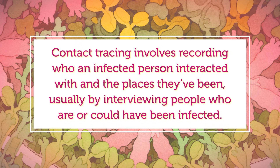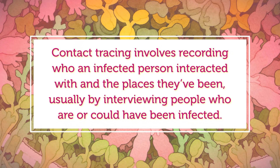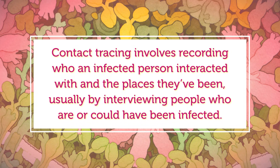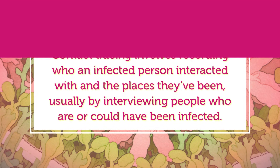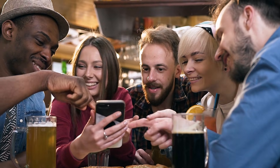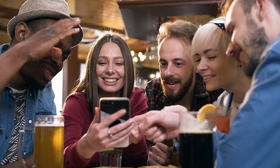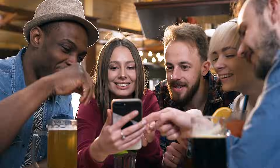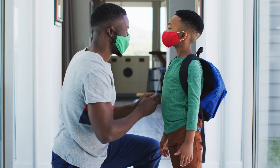One of the ways epidemiologists get data on transmission is through contact tracing. Contact tracing involves recording who an infected person interacted with and the places they've been, usually by interviewing people who are or could have been infected. During the early stages of the COVID-19 pandemic, contact tracing identified that loads of people became infected when in the same poorly ventilated indoor spaces. This is a key piece of evidence that the virus spread largely through droplets and helped epidemiologists decide to recommend wearing masks as an intervention. Recommendations like these, which stop people from getting sick and even save lives, come from the tools of epidemiology.